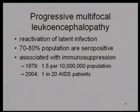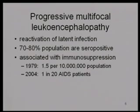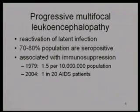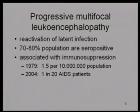PML appears to be due to the reactivation of a latent infection with these polyomaviruses. About 70–80% of the population are seropositive for these viruses; most of us were never aware of any disease when we got them. We seem to be infected without being aware of it, and most of us apparently never suffer again. But under certain circumstances involving immune suppression, these viruses can come out of hiding, start replicating, and cause disease — in this case, attacking the oligodendrocytes in the brain. This was an extremely rare disease, with a frequency of about one in ten million.